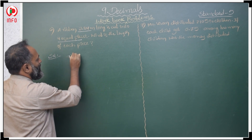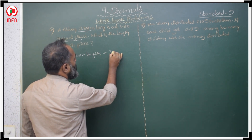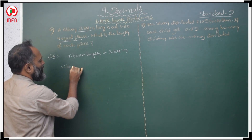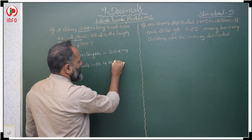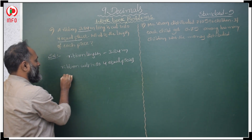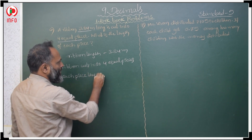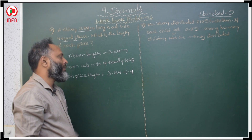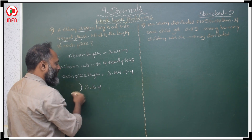Ribbon length is 3.84 meters. The ribbon cuts into 4 equal pieces. Each piece length is equal to 3.84 divided by 4.